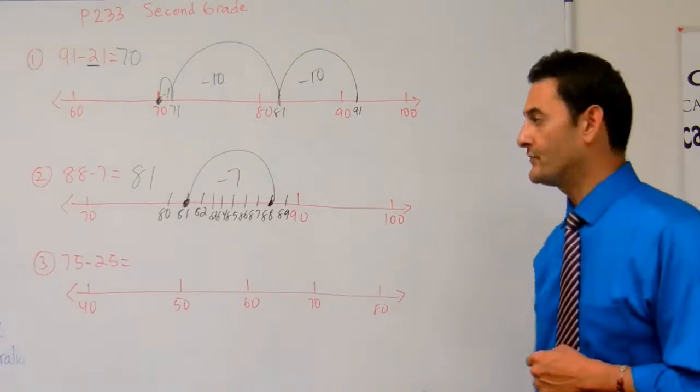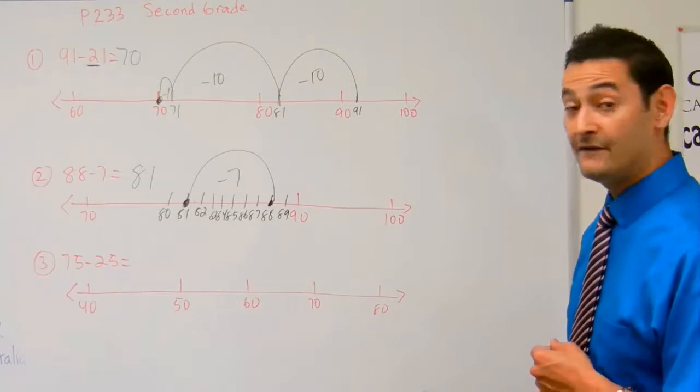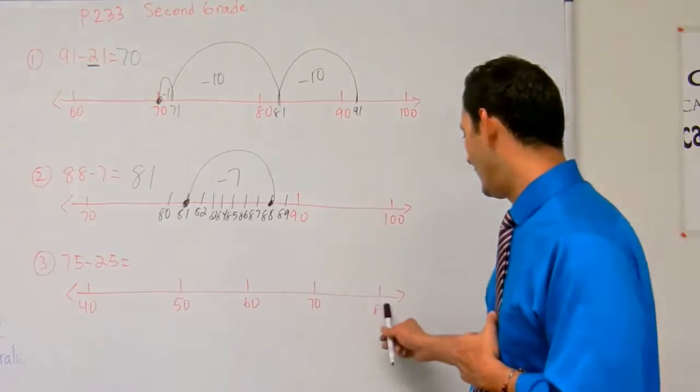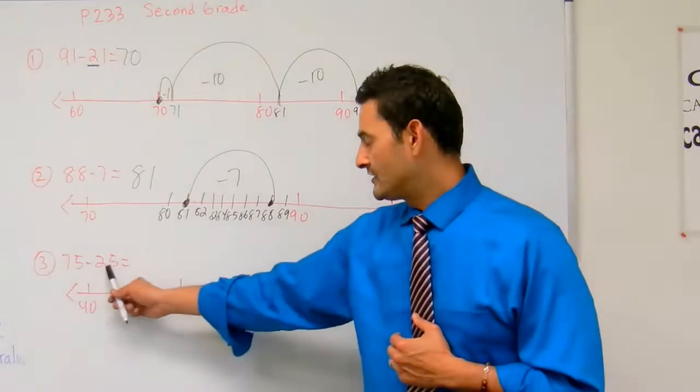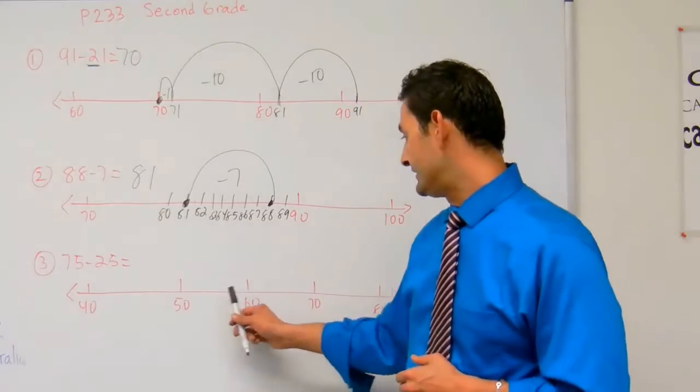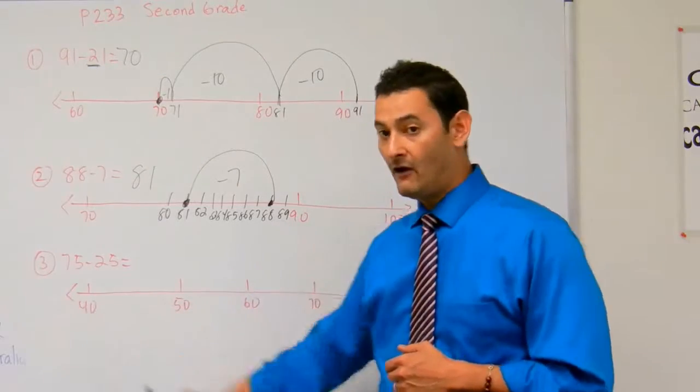Now let's look at number 3. I have 75 minus 25. With 75, I'm going to go up to 80. I have to subtract 25, so I'm going to go back 30: 70, 60, 50, 40. That's why I went all the way back to 40.